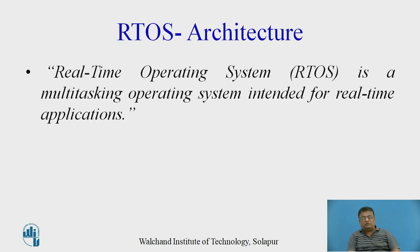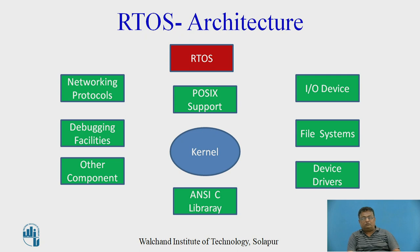RTOS architecture. The real-time operating system is defined as a multitasking operating system mainly designed for real-time applications where timing constraint is very important. The output of the system must respond to the input. As far as the RTOS architecture is concerned, at the centre, a very small component of software is lying which is called the kernel. Hence, kernel is the smallest component of the real-time operating system.